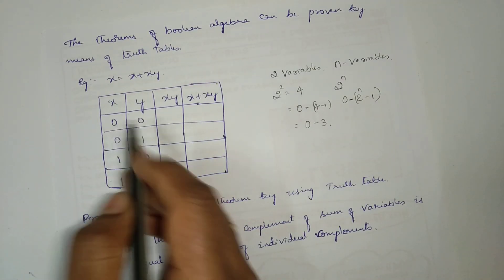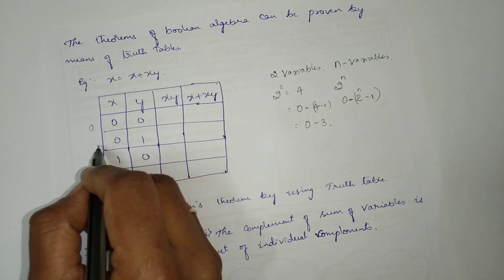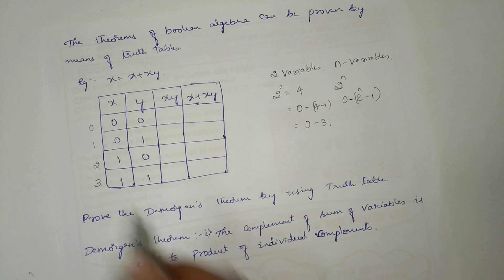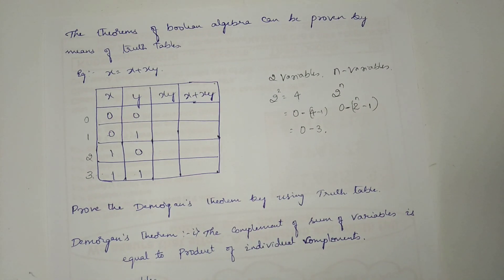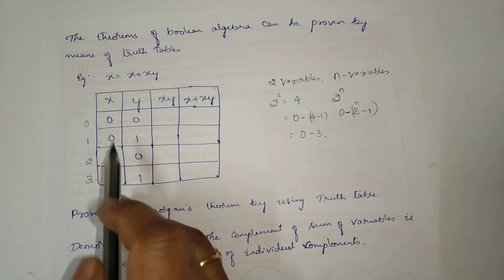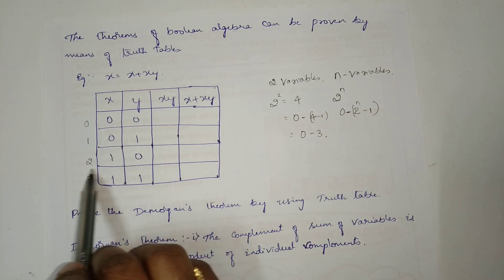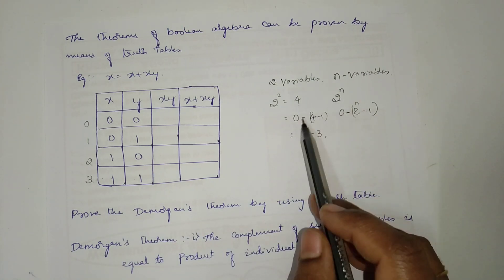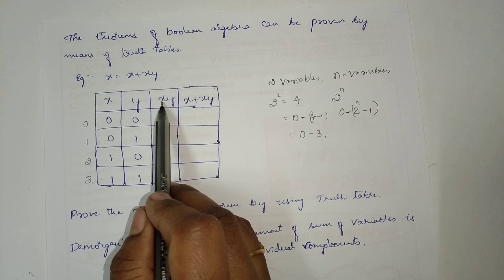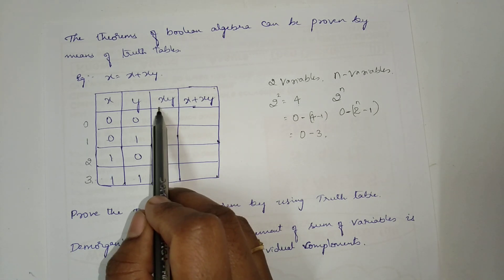The values ranging from 0 to 2 power n minus 1. So, 0 to 2 power n minus 1. Four minus 1, what is four minus 1? Three. So, 0 to 3. That is, this is the decimal equivalent of 0. Zero, one is 1. One, zero is 2. One, one is 3. You have to follow this method always.